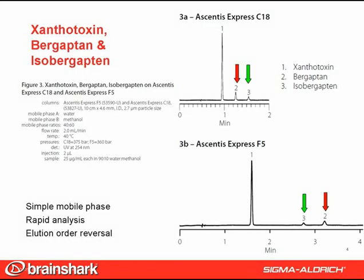We had the same observation with the remaining three compounds: xanthotoxin, bergapten, and isobergapten. Simple mobile phase, very rapid separations on Ascendis Express, and elution order reversal between the C18 and F5 phase chemistries. The F5 column gave longer retention, as well as elution order reversal for bergapten and isobergapten.